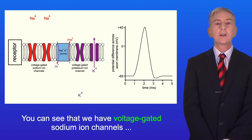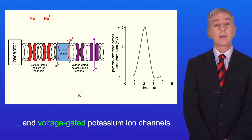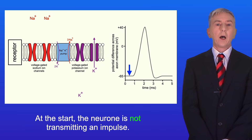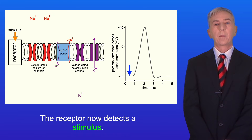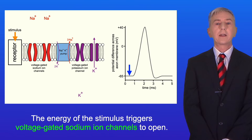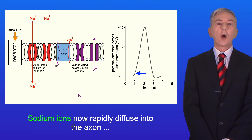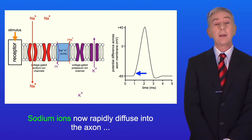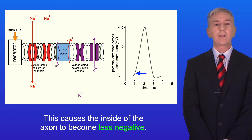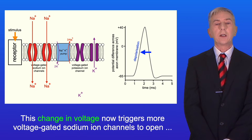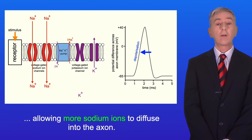We have voltage-gated sodium ion channels and voltage-gated potassium ion channels. At the start, the neuron is not transmitting an impulse and the membrane is at the resting potential of minus 65 millivolts. The receptor now detects a stimulus, and the energy of the stimulus triggers voltage-gated sodium ion channels to open. Sodium ions now rapidly diffuse into the axon down their electrochemical gradient, causing the inside of the axon to become less negative. This change in voltage triggers more voltage-gated sodium ion channels to open, allowing more sodium ions to diffuse into the axon.